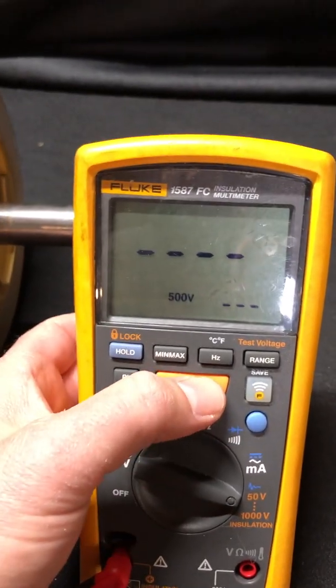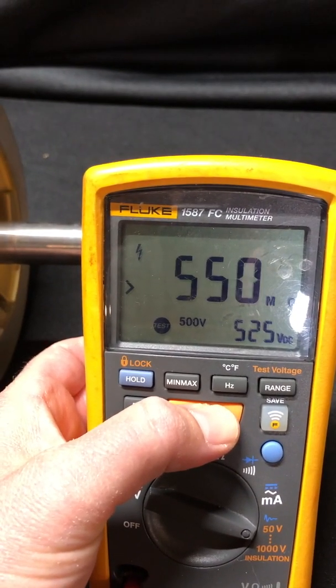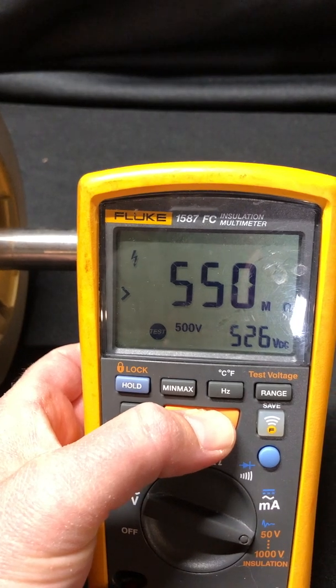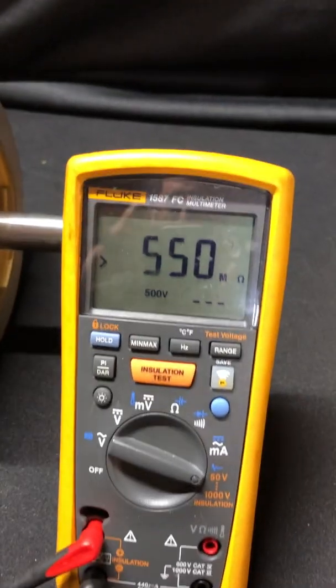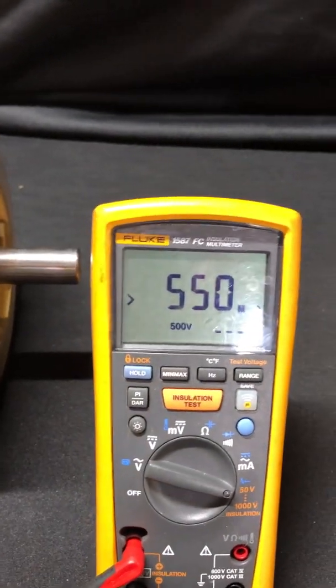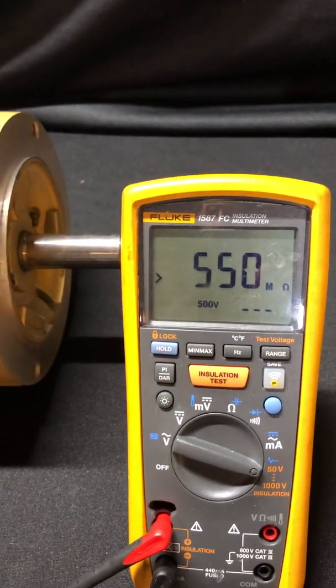So I'm at 500 volts, hit insulation test, greater than 550 mega ohms. That means we've got very high resistance and that's showing actually a good reading.